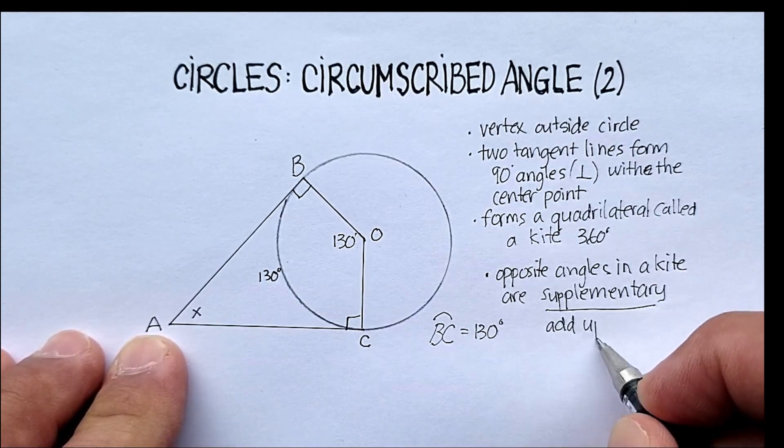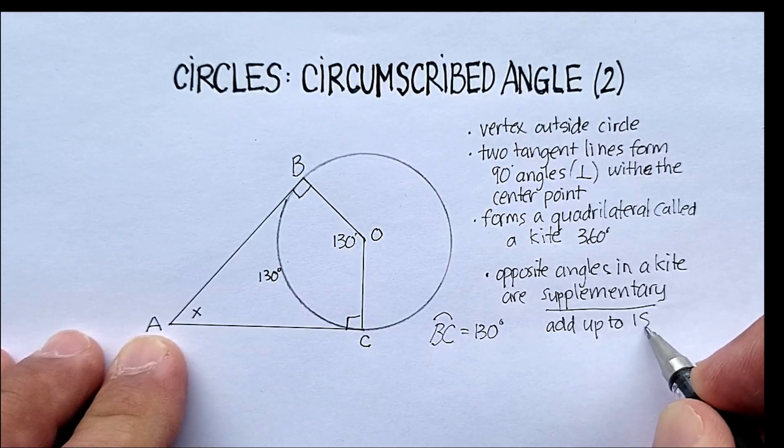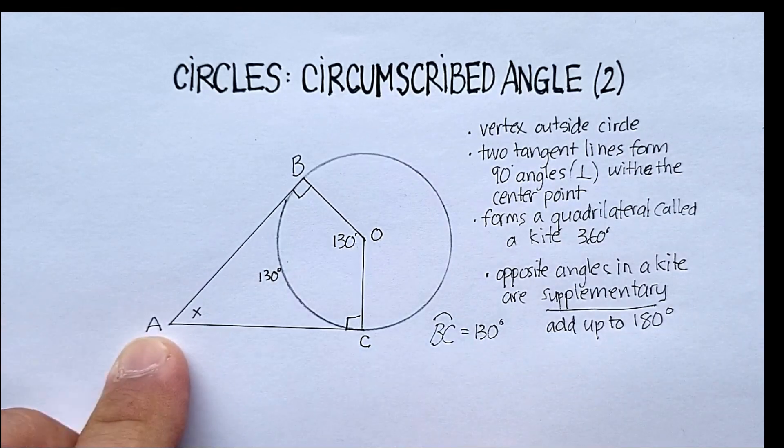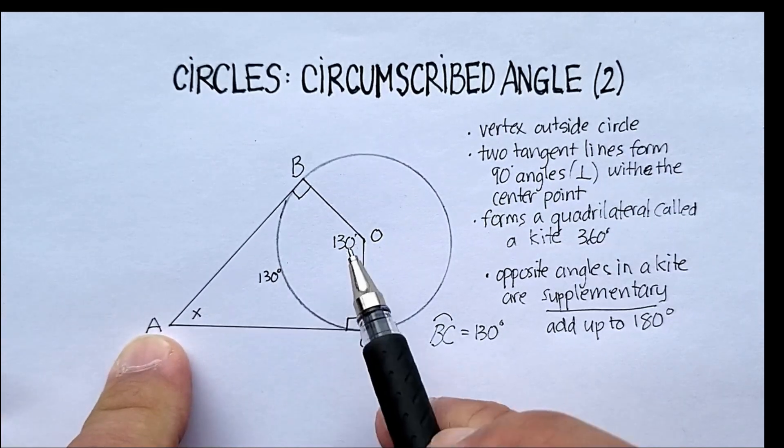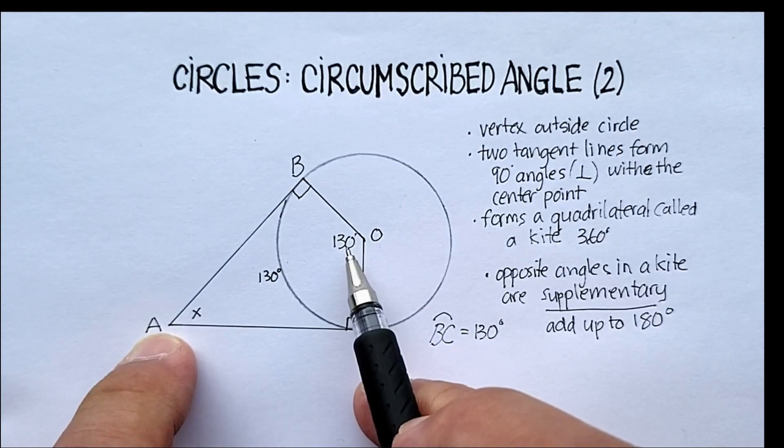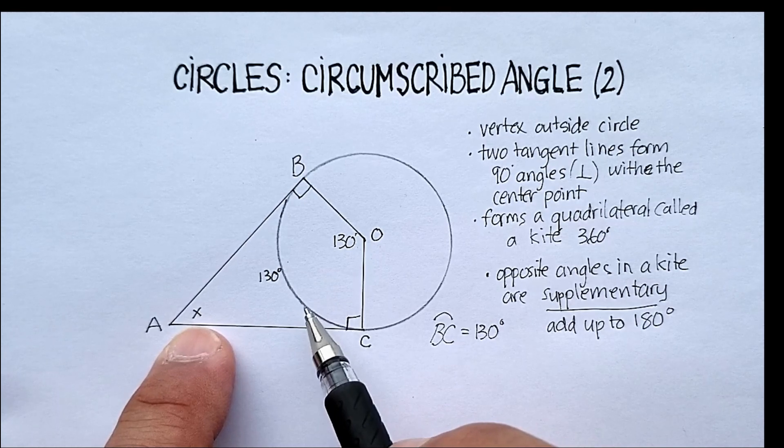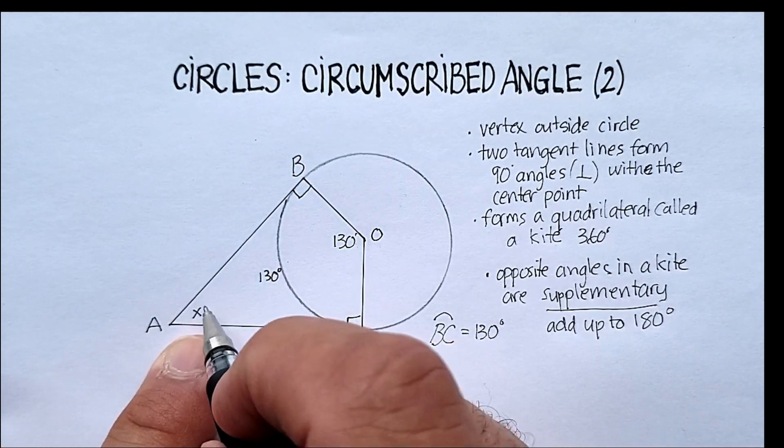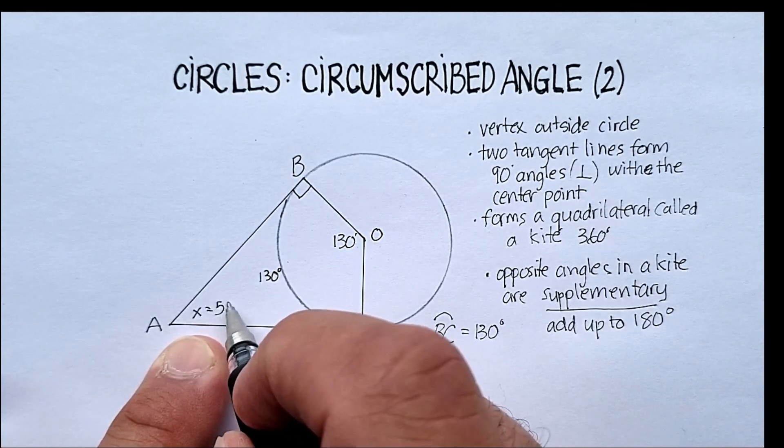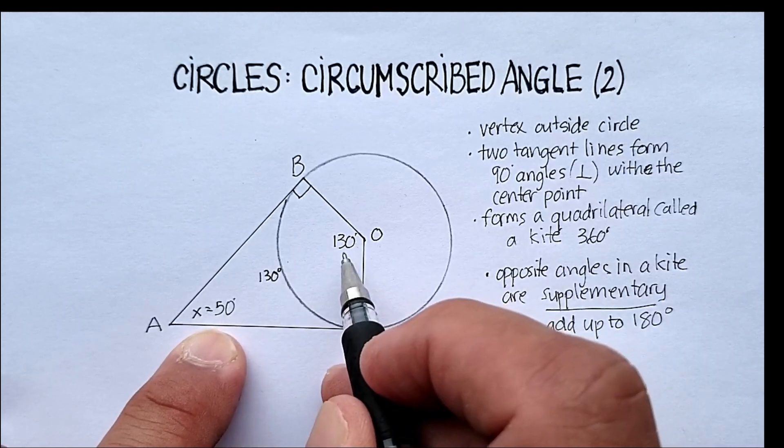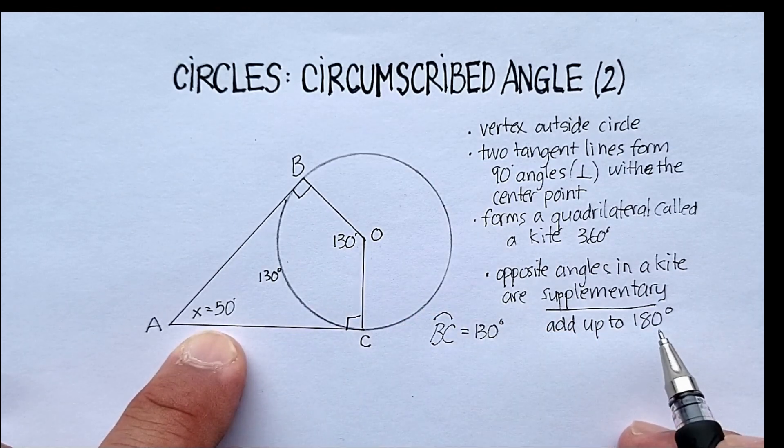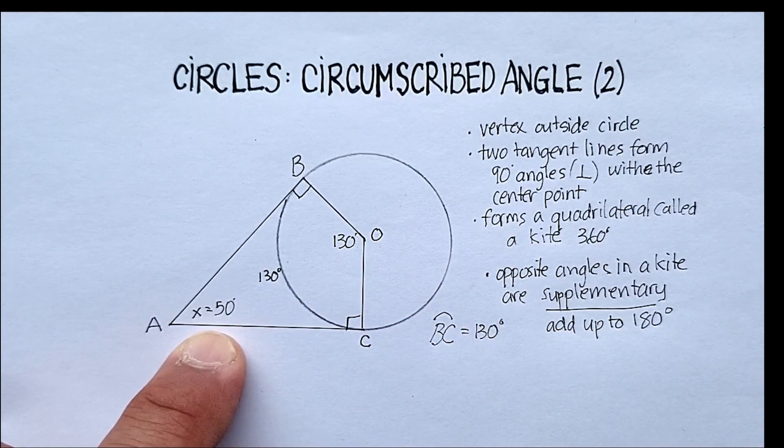Add up to 180 degrees. If I know that the central angle here is 130, then I don't even have to add up everything else. I know that this angle would have to be 50, because 50 and 130 equals 180.